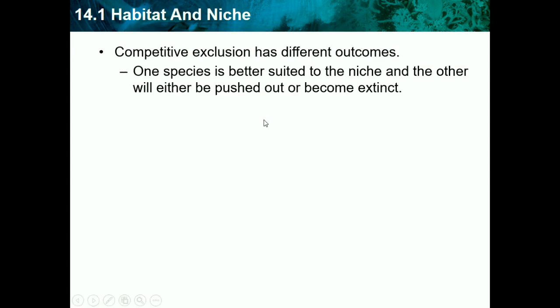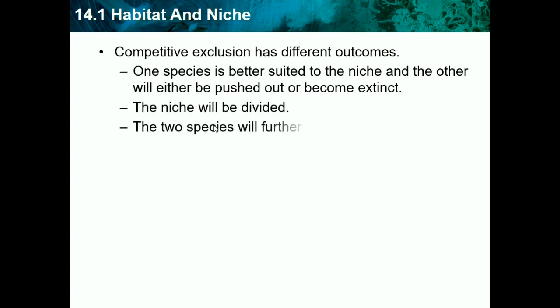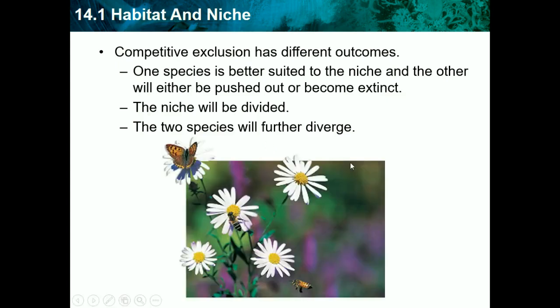Competitive exclusion has different outcomes. One species may be better suited to a niche than another, and the other will either be pushed out or become extinct. Or the niche could be divided and the two species will further diverge. If one species is better at gaining a shared resource, the other will likely go extinct or its population will diminish. Bees and butterflies, for example, both go to flowers as part of their niche.